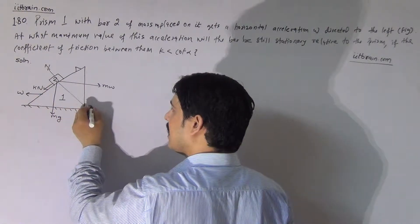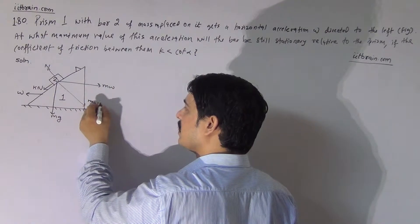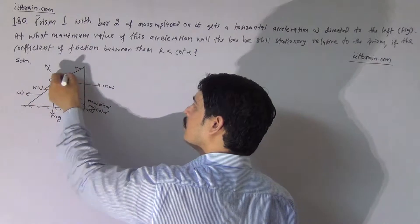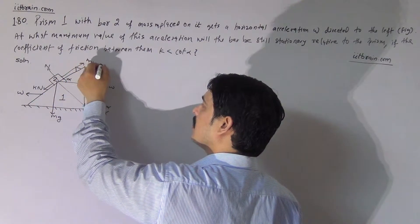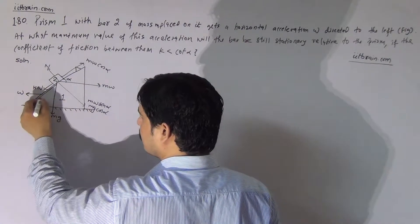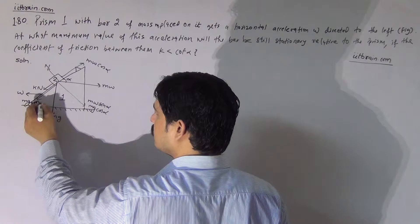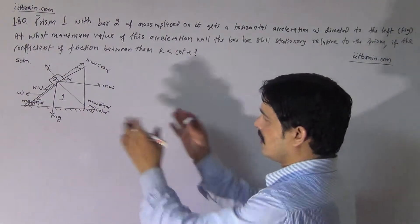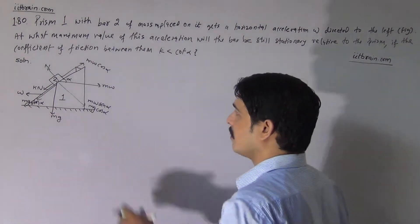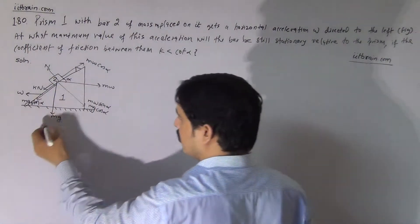Now if we resolve the components of Mg and M·W, we get Mg·cos(alpha) and M·W·sin(alpha) in one direction. One force M·W·cos(alpha) will be along the incline, and the component of Mg in the downward direction along the incline will be Mg·sin(alpha). For the bar to remain at rest, we must balance forces along the incline and perpendicular to it.